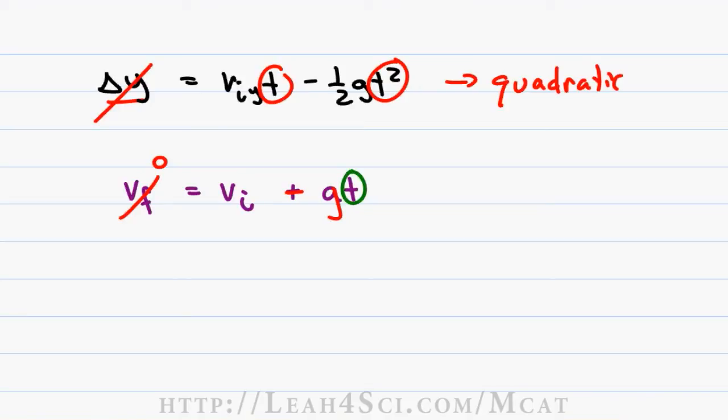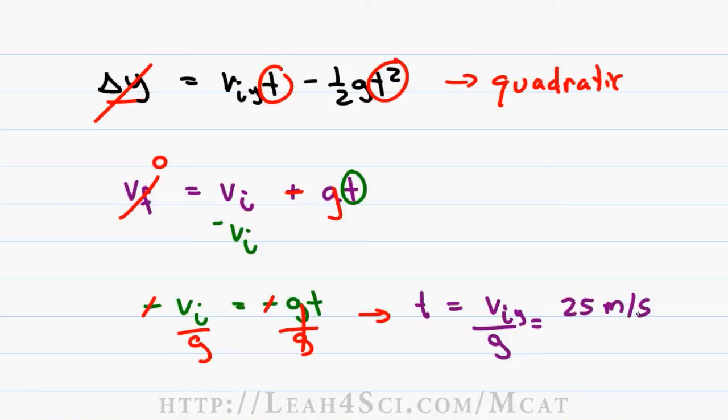So let's go ahead and isolate t. We'll subtract V initial from both sides giving us negative V initial equals negative gt. We'll cancel out the negatives giving us positive values to work with and then we'll divide both sides by g giving us the new equation t equals V initial y over g. We got a V initial y as 25 meters per second and gravity on the MCAT estimates to 10 meters per second squared.